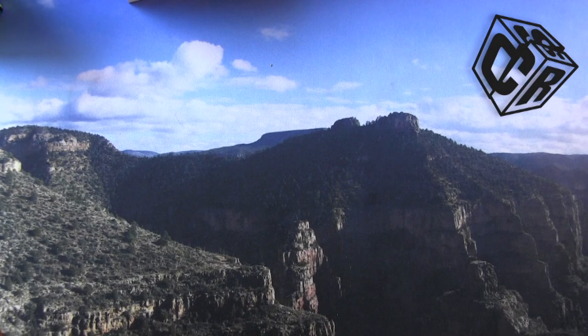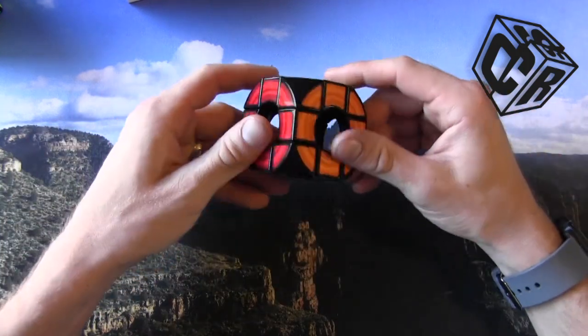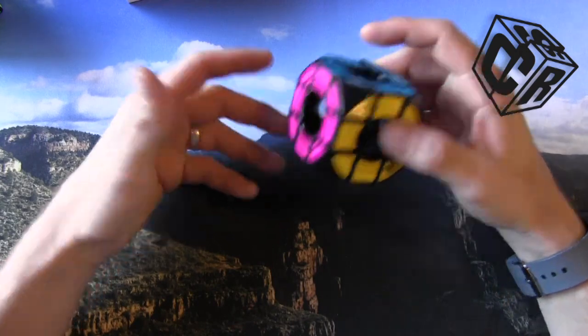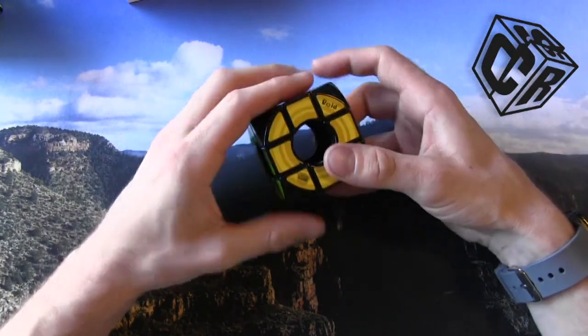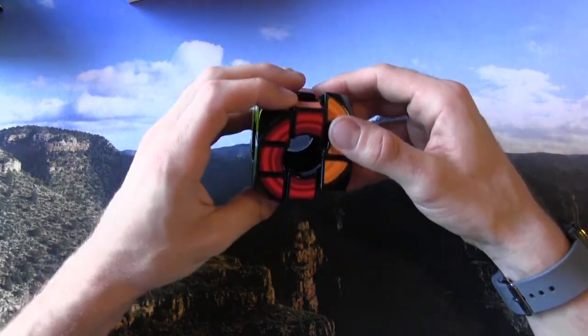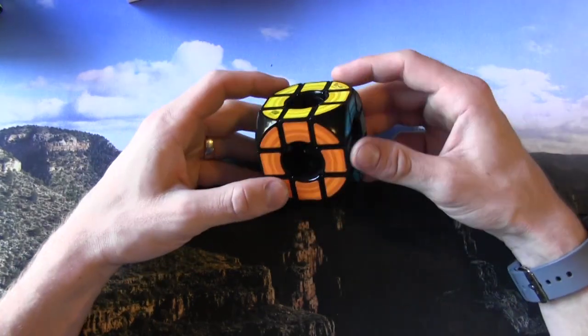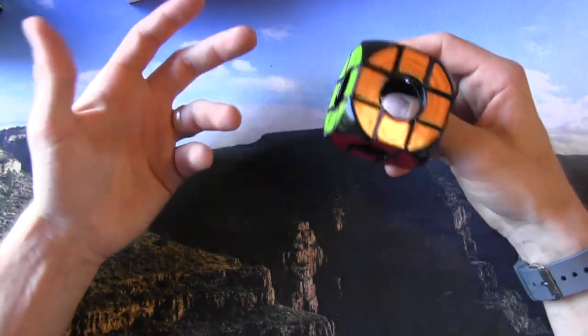Hey, Sean here from speedcubereview.com. So let's talk about how to solve a void cube. Solving a void cube is just like a 3x3, but there are no centers. And because of that, you can run into what is called a parity.